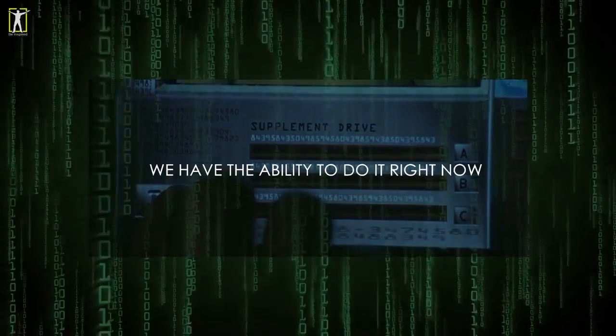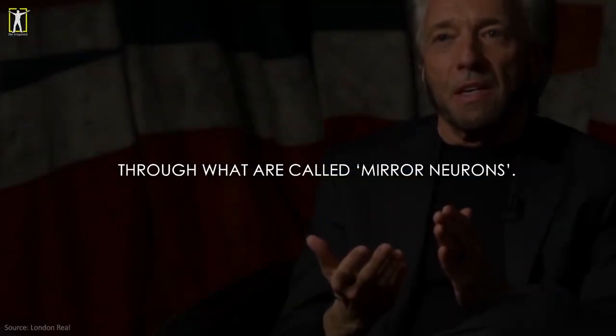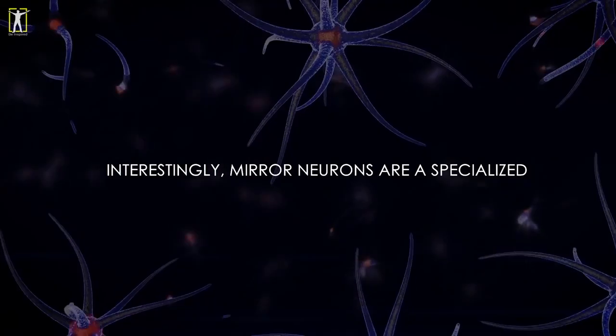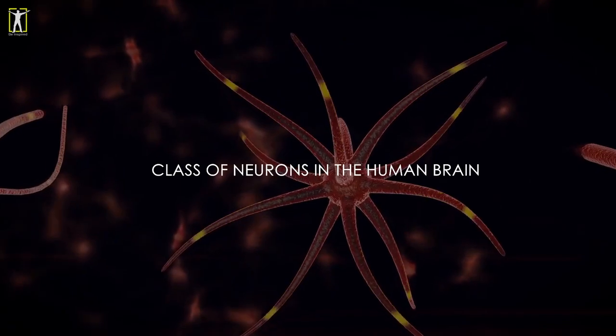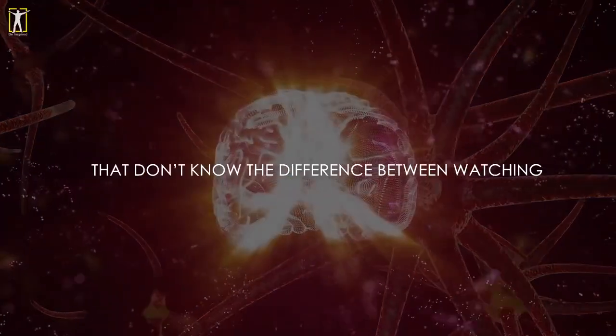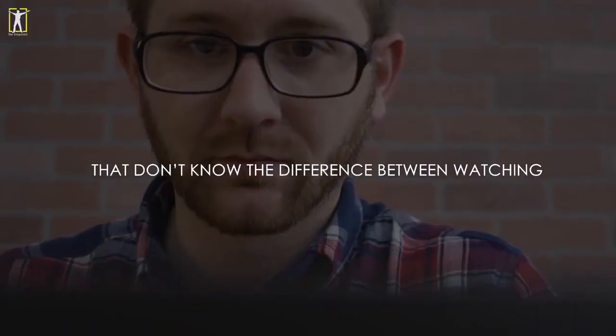We have the ability to do this right now through what are called mirror neurons. Interestingly, mirror neurons are a specialized class of neurons in the human brain that don't know the difference between watching and experiencing.